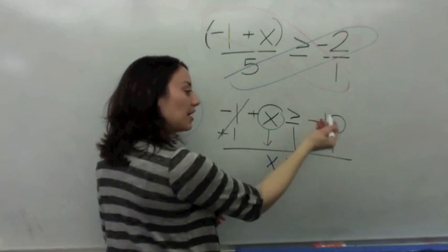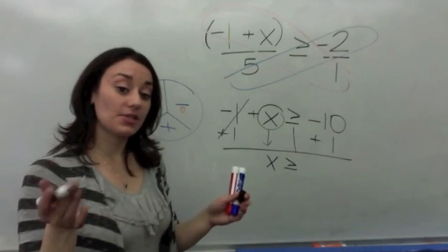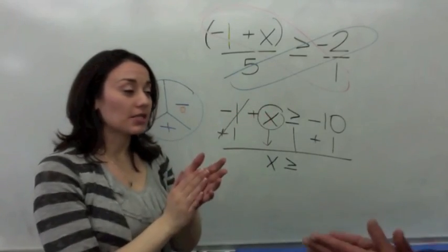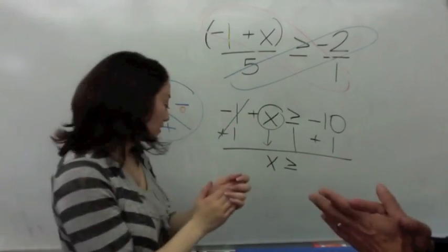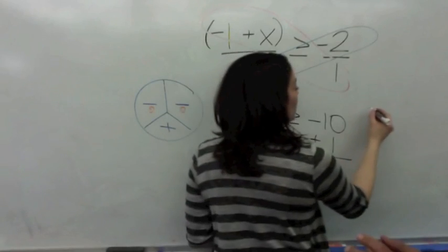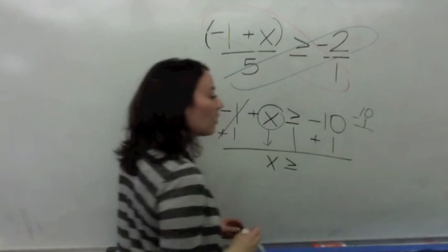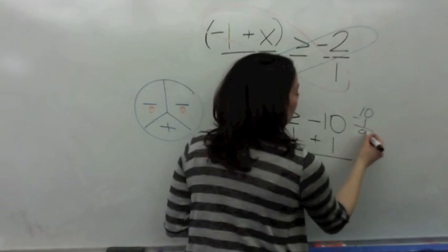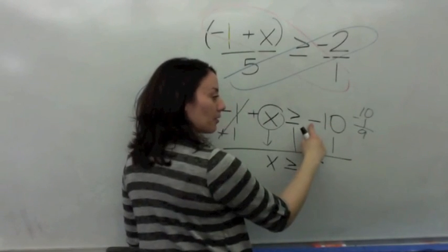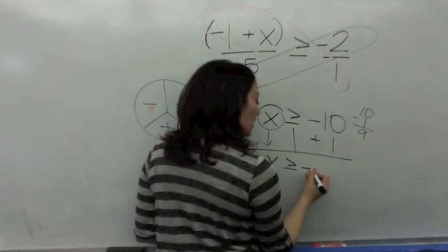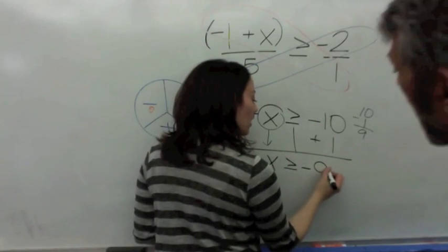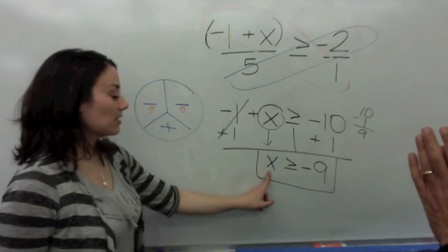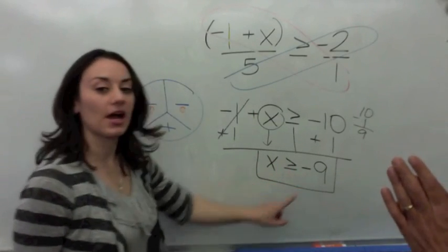Now, you have a negative ten and a positive one. Are they same signs or different signs? Different signs. So, you say, different signs subtract. Try it, Dad. Different signs subtract. Okay? So, you have ten minus one. What does ten take away one? Nine. Thank you. It's nine. Okay? But, you keep the sign of the higher number. So, because ten is bigger, the answer is negative nine. Good job. Read the inequality with me. And, it says, X is greater than or equal to negative nine. Thank you.